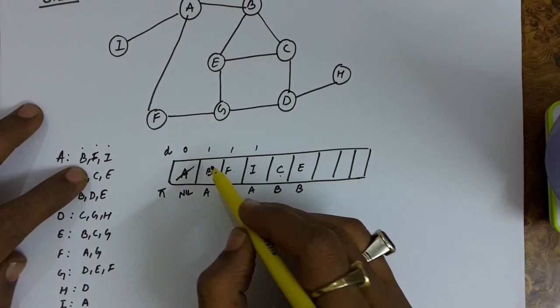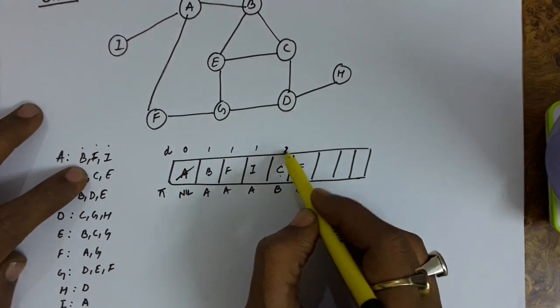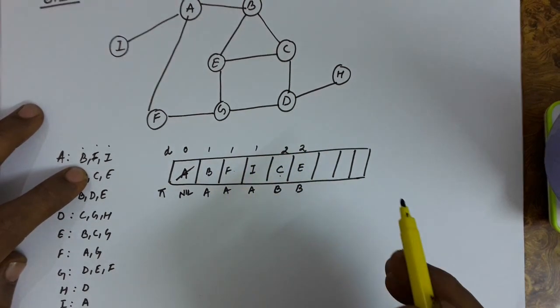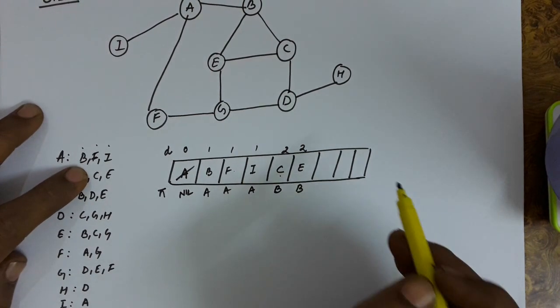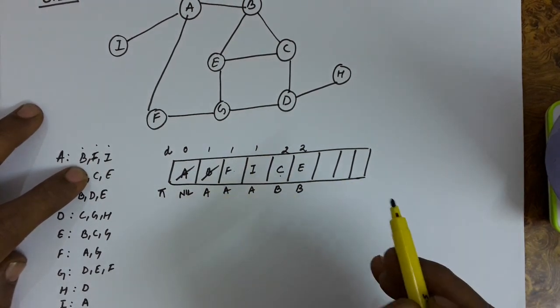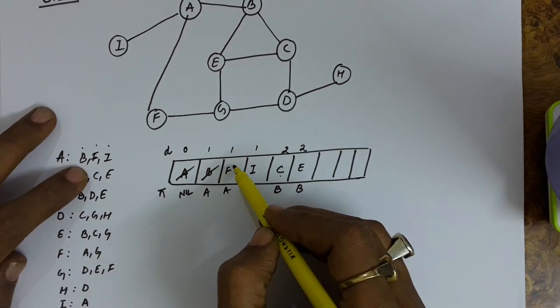C and E will be having distance one more than B. So the distance of these two vertices will be two. Delete this B and then take F.